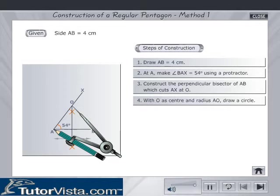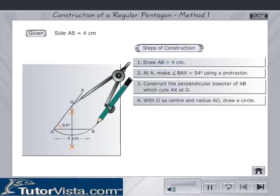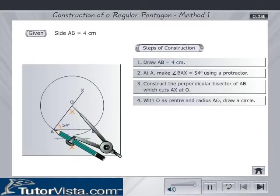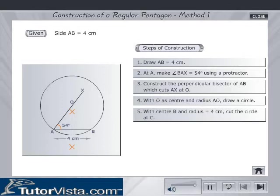With O as center and radius AO, draw a circle. With center B and radius is equal to 4 cm, cut the circle at C.